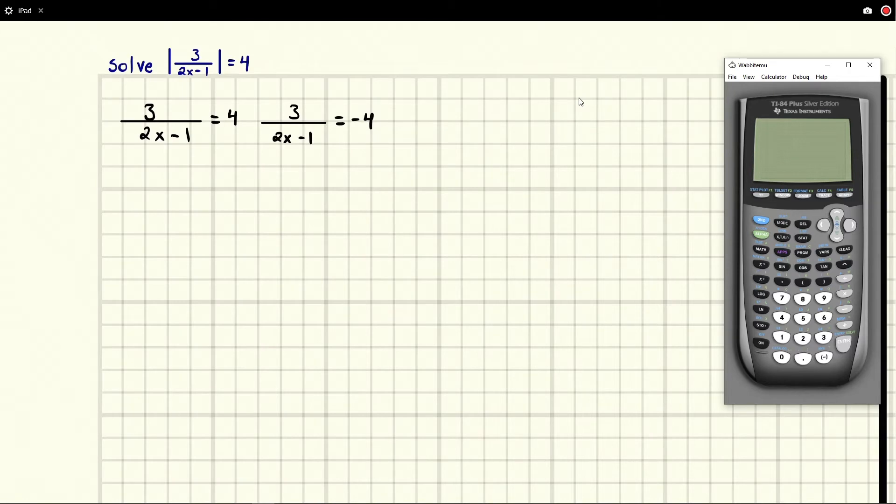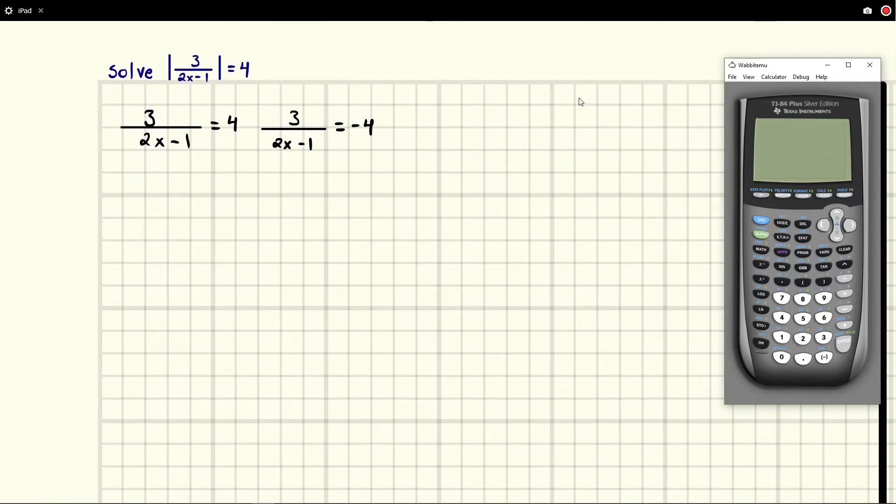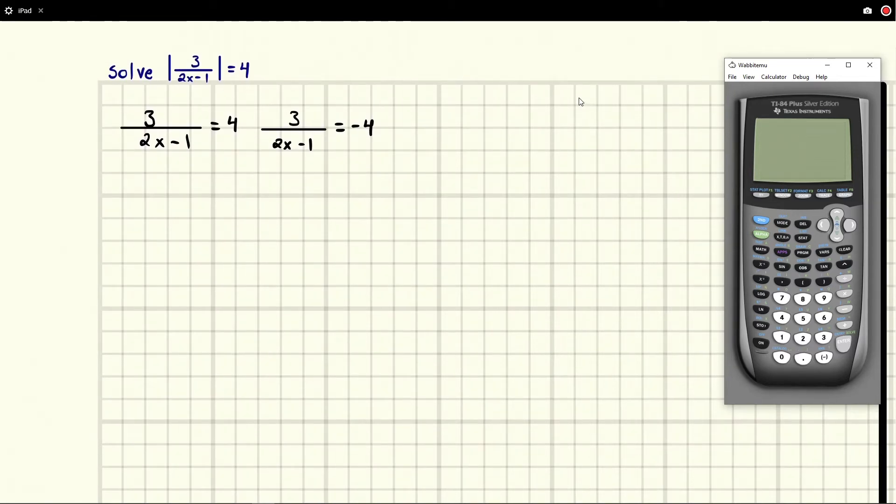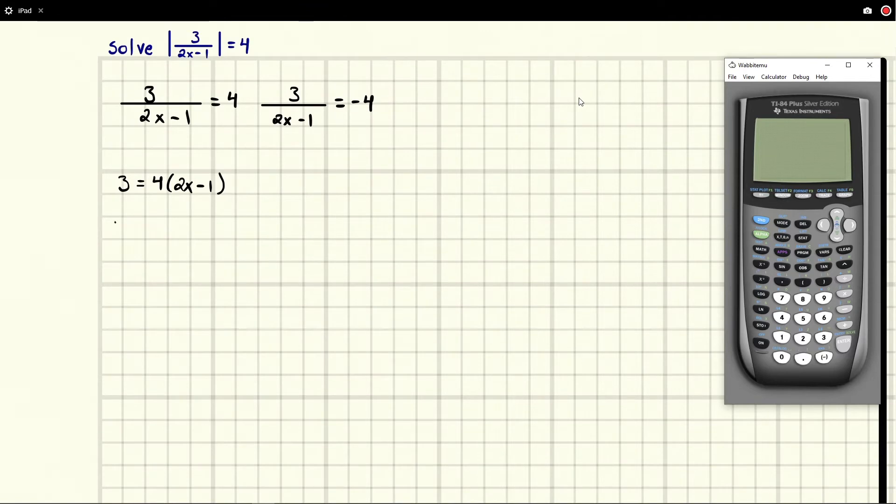To do that we're going to multiply both sides by 2x minus 1. When we do that, the 2x minus 1 will simplify on one side and we're going to be left with 3, and on the other side we're going to be left with 4 times 2x minus 1. From here we can distribute, and we're doing exactly what we did in earlier sections. This is going to be 8x minus 4.